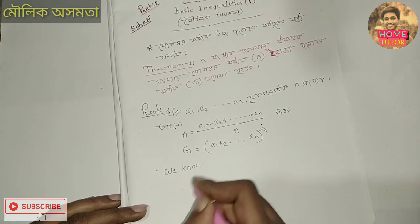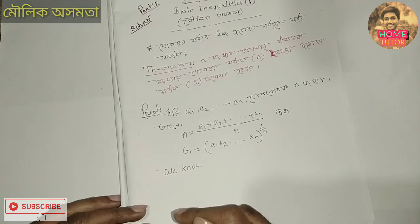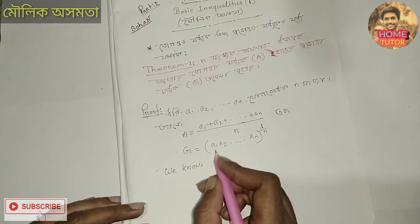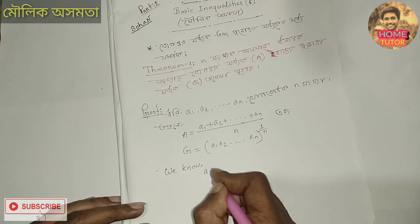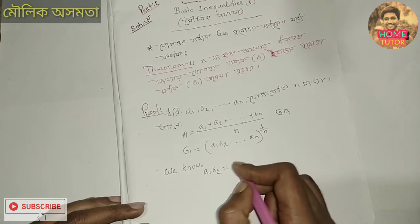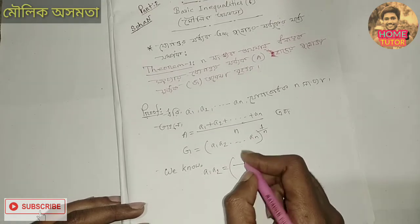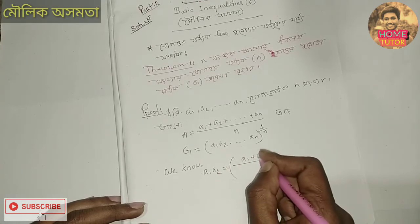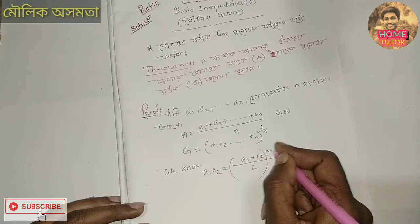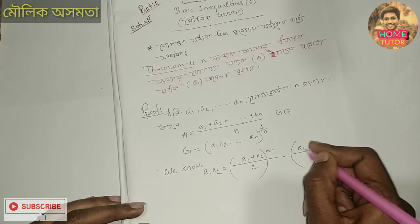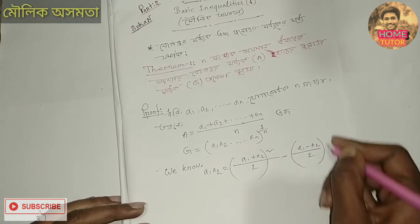Using the identity: a·b = ((a+b)/2)² − ((a−b)/2)². So for a1 and a2, we have a1·a2 = ((a1+a2)/2)² − ((a1−a2)/2)².